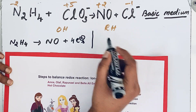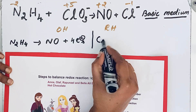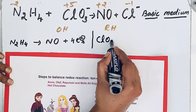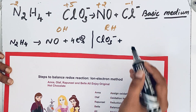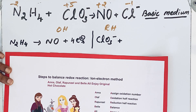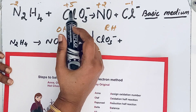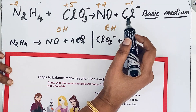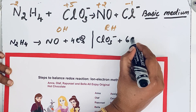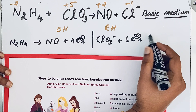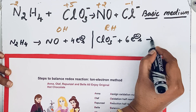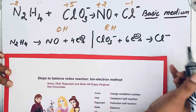Now the reduction half reaction: ClO3 minus gains electrons, because reduction is the gaining of electrons. How many electrons are gained? Here chlorine goes from plus 5 to minus 1, a change of 6, so ClO3 minus gains 6 electrons and is converted into Cl minus.